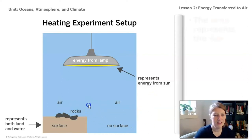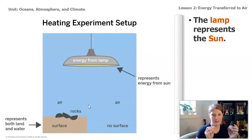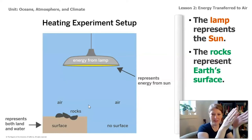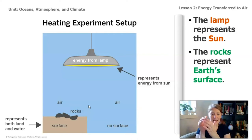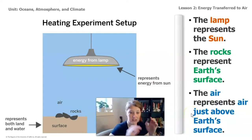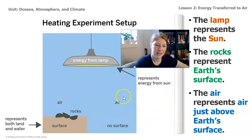In this experiment, the sun is represented by the lamp. When the lamp is on, that means it's daytime and the Earth is receiving energy from the sun. The rocks represent the surface of the earth, set right on the edge of the table so the lamp is hanging over — one side has no surface, and the other side has a surface represented by the rocks. And finally, the thermometer represents the air just above Earth's surface. We have the air that doesn't have surface below it, and the air that does have surface below it.